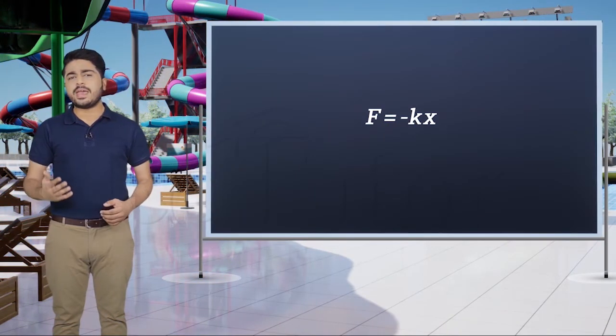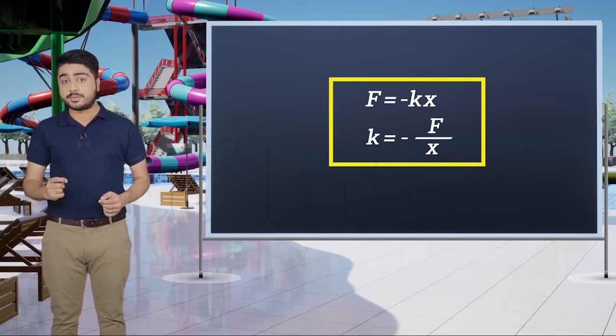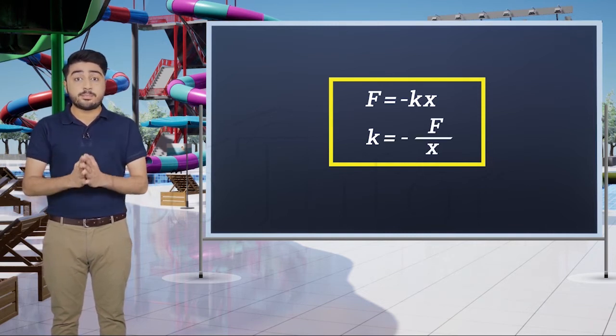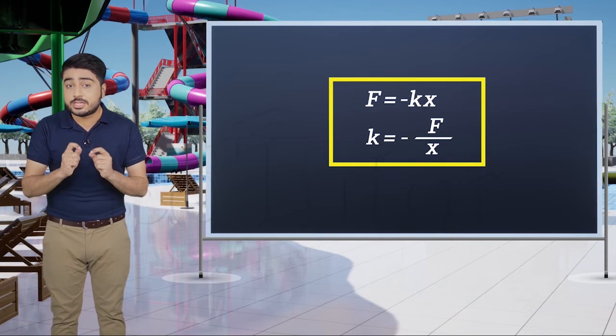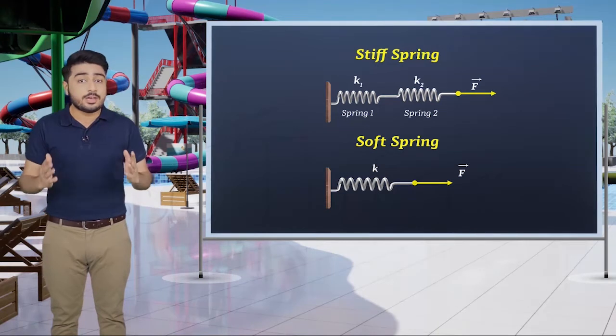The value of k can be calculated from k = -F/x. The value of k measures the stiffness of the spring, meaning that stiff or hard springs have a larger value of k.